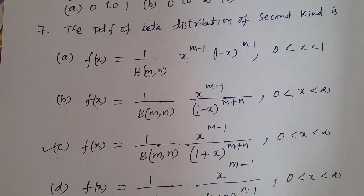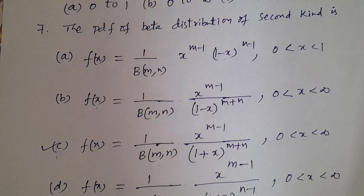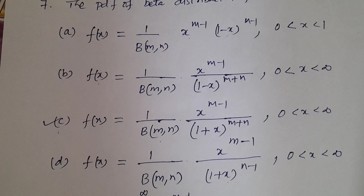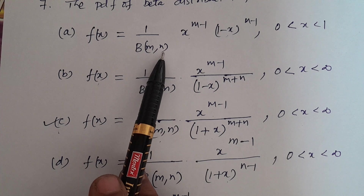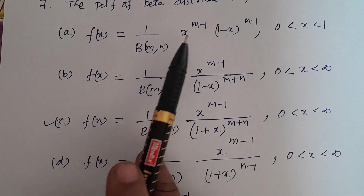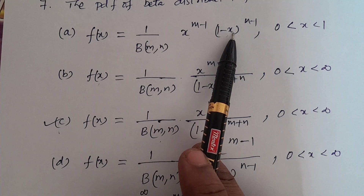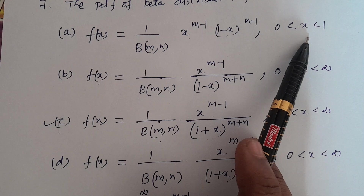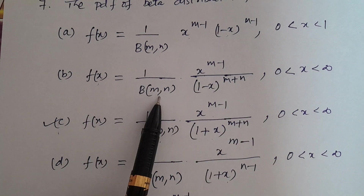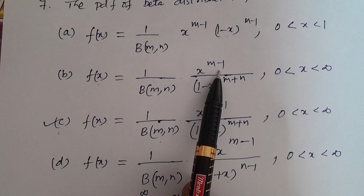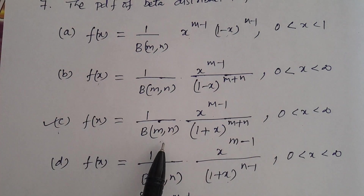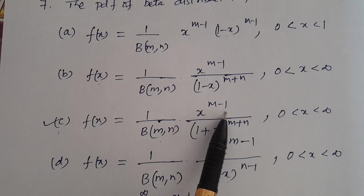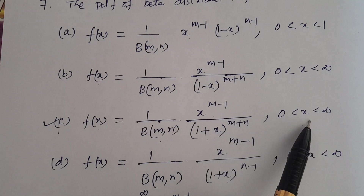Question number 7: The PDF of beta distribution of second kind. Options: A — f(x) = 1/β(m,n) · x^(m-1) · (1-x)^(m+n), 0 < x < ∞. B — f(x) = 1/β(m,n) · x^(m-1) · (1+x)^(m+n), 0 < x < ∞. C — f(x) = 1/β(m,n) · x^(m-1) · (1+x)^(m+n), 0 < x < ∞.